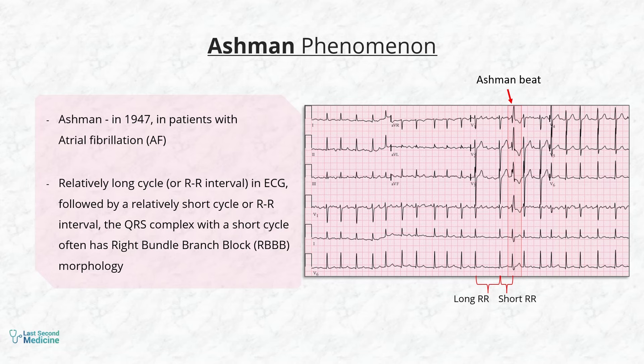The QRS complex with a short cycle often has right bundle branch block morphology.